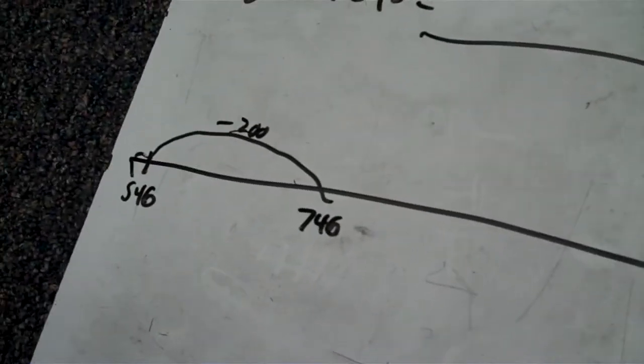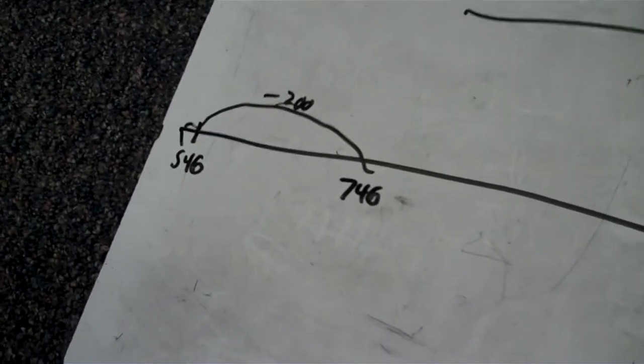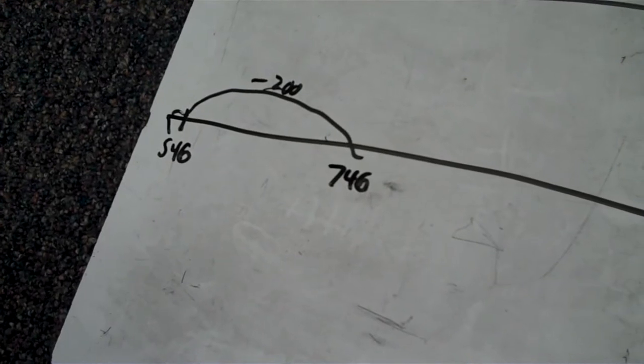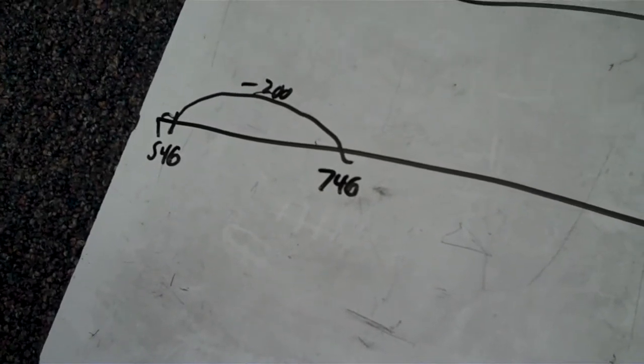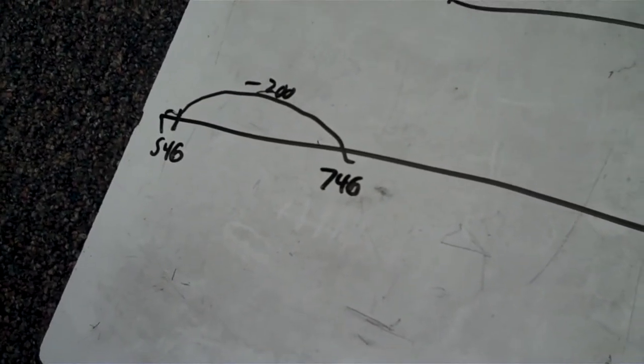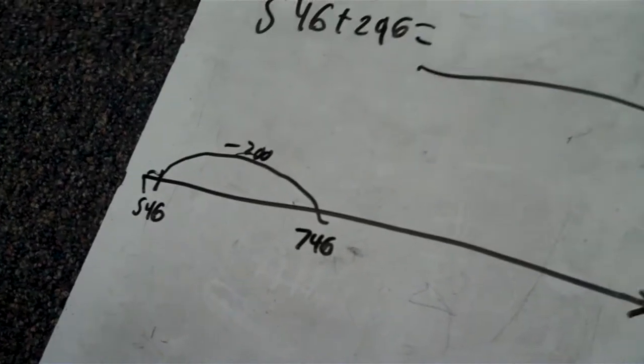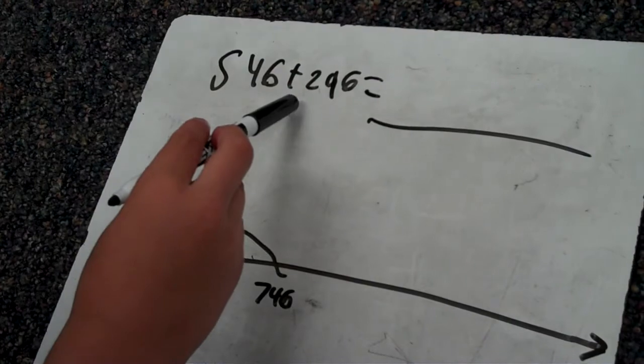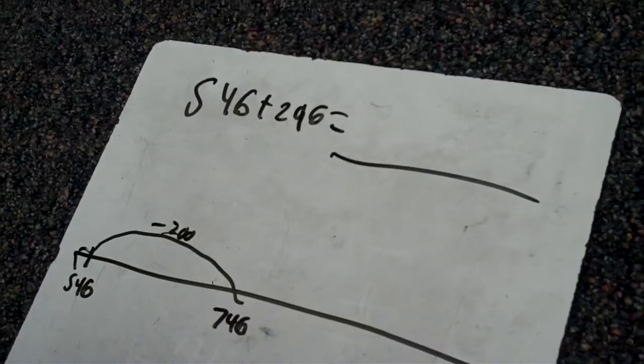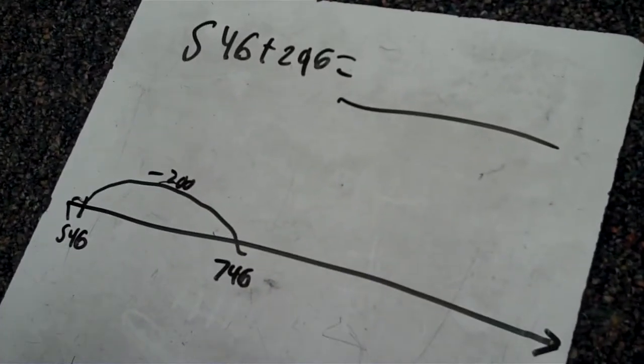So you were saying that like you could have broken up that 200 into what would you have broken it up into? Like 200. Okay. So you could have broken it up into 200, but it's easier just to do 200. Yeah. Now where did you get the 200 from? I got it from the number 296. Oh, okay. So you have to look at the place values? Yes. Okay. All right.